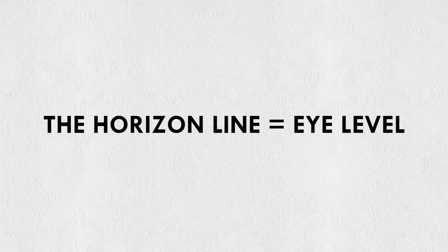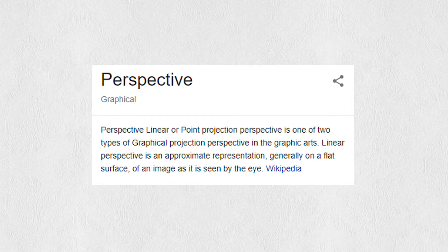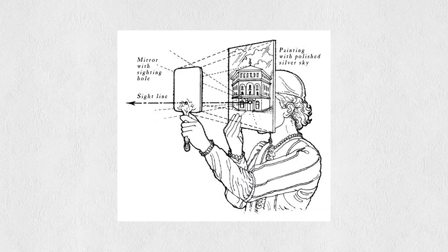The horizon line is your eye level. Everything gets smaller as it gets closer to it because it's getting further away from you. The purpose of drawing in perspective is to represent what we see in reality in the three-dimensional world on a piece of paper — a flat two-dimensional surface. It took people a long time to work out how to do this, but thankfully they did and now we can take advantage of it.